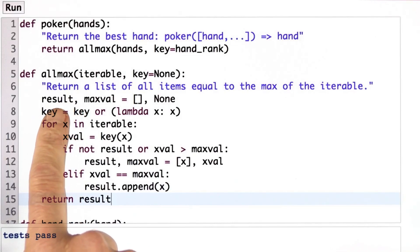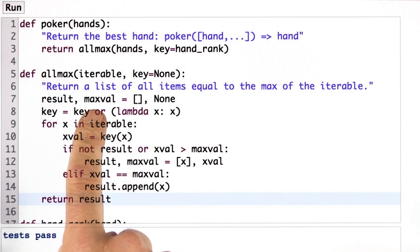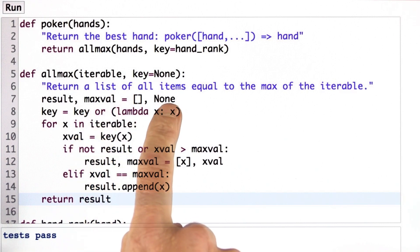So here's what I'm going to do. I'm going to start out by keeping track of the results in a list, which is initially the empty list, and keeping track of the max value. Initially, we don't have any.